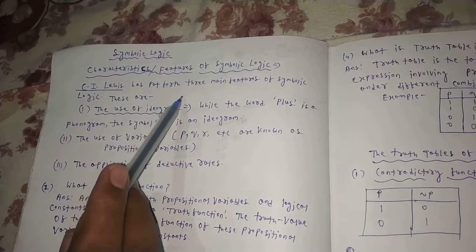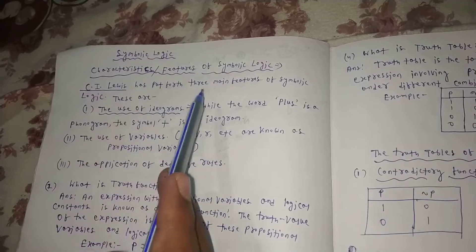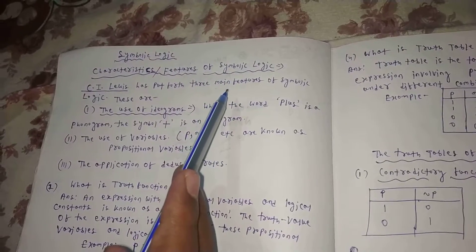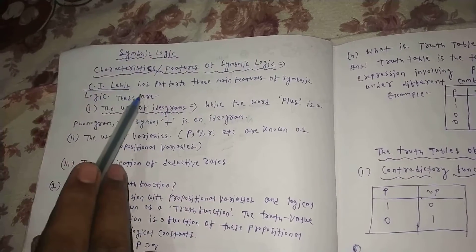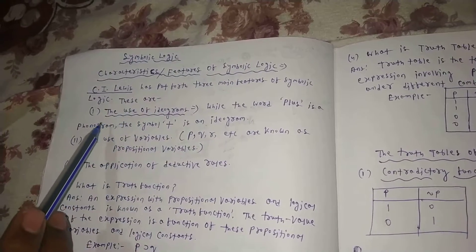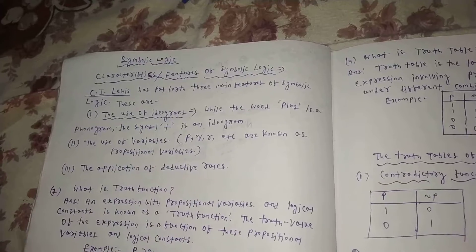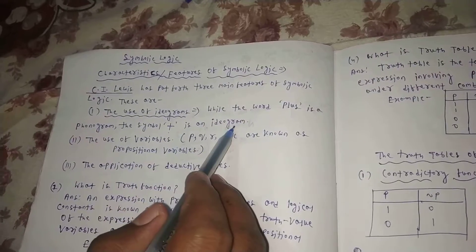C.I. Lewis has put forth three main features of symbolic logic. First, the use of ideograms. While the word 'plus' is a phonogram, the symbol plus is an ideogram.